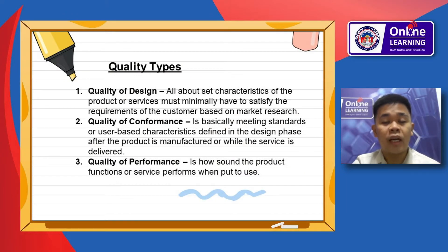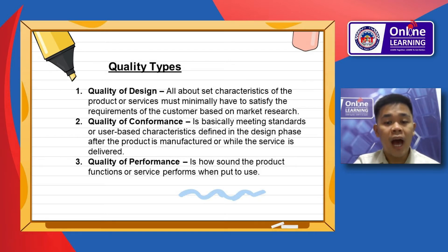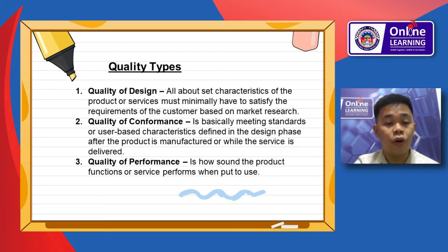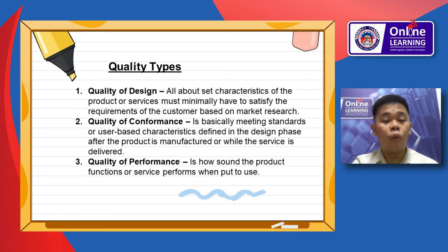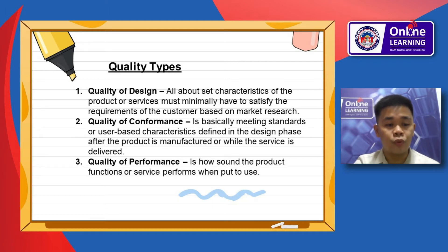There are quality types. Number one, quality of design — it is the set of characteristics a product or service must minimally have to satisfy the requirements of the customer, based on market research. Then, quality of conformance — it is basically meeting the standard or user-based characteristics defined in the design phase after the product is manufactured or while the service is delivered. Quality of performance refers to how well a product functions or a service performs when put to use.